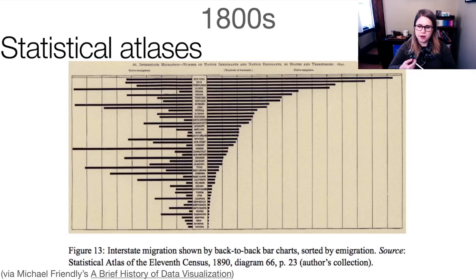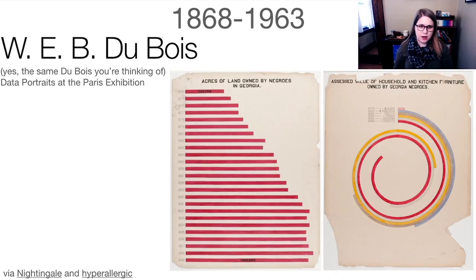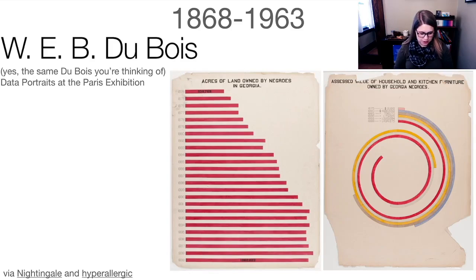In the 1800s there was a trend of statistical atlases, which described information about particular areas or subjects, and most of that data visualization tended to be about white people. A really interesting contrast to that is the work of W.E.B. Du Bois. Du Bois was one of the founders of the NAACP and a huge advocate against Jim Crow laws — a very prolific thinker. One of the probably least-known things he did is he created this set of data portraits about black people in the United States, displayed at the Paris exhibition, which is sort of like the World's Fair. It had a huge impact in changing how people saw black folks in the United States.